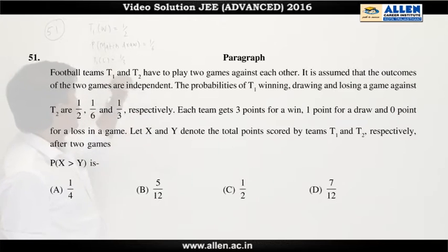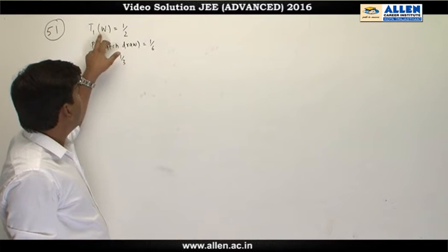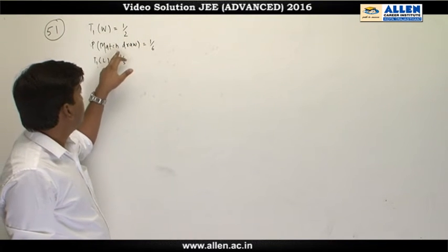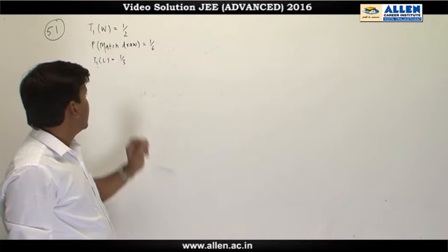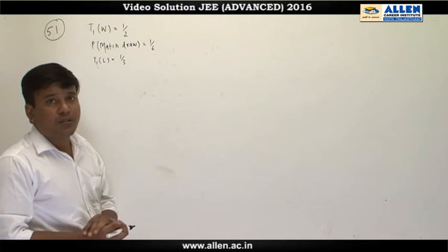In the question it says there are two football teams, and the winning probability of T1 is half, the probability that the match will draw is 1 by 6, and losing probability is 1 upon 3.